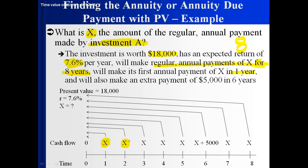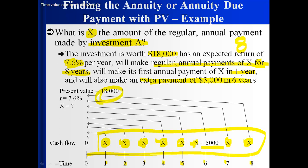So payments occur at years one through eight. In addition, it will make an extra payment of $5,000 in six years. We want to figure out what those X payments are.